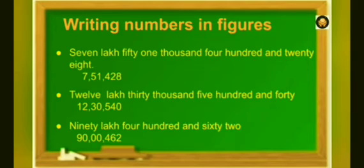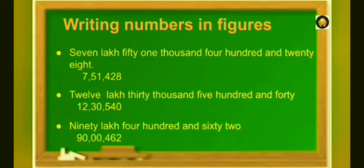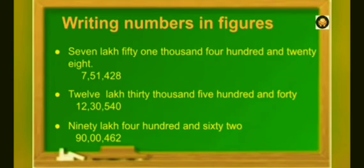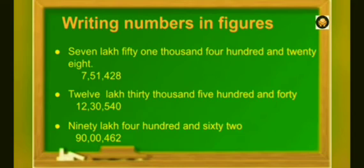Now, let's see how to write numbers in figures by putting commas. For 7,51,428: after 7 lakhs, put a comma, then write 51, again put a comma, and then write 428. Similarly, in the second example, 12 lakhs 30,540: after 12 lakhs put a comma, then after writing 30, put a comma, and then write 540. In the third example, 90,00,462: after 90, put a comma, then since there are no thousands, put 0 in the 10,000 place and 0 in the 1,000 place, then put a comma and write 462. So while reading, you read it as 90,00,462.